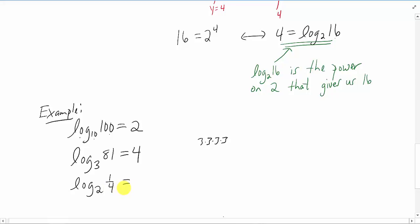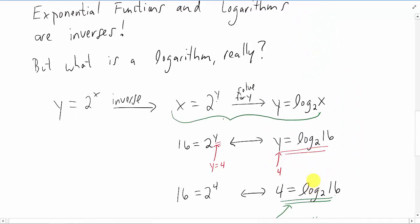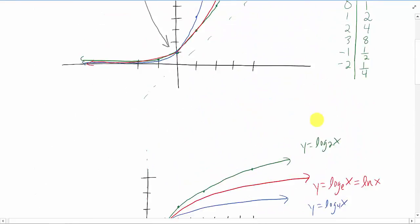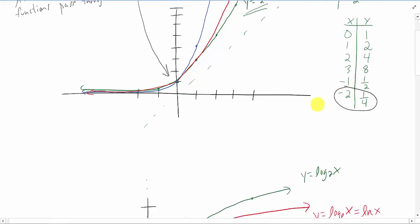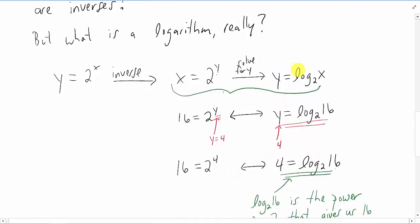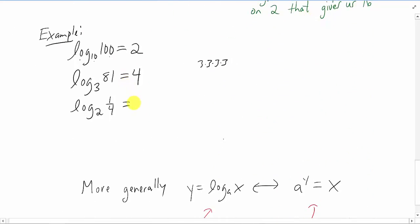I'm going to scroll back up to our very first example. We're asking 2 to what power gives us 1 fourth? If we look up at our original graph right at the beginning here, we wrote down that 2 to the negative 2 power gives us 1 fourth right there. So the answer to the problem down here is just going to be negative 2. 2 to the negative 2 power is 1 fourth.